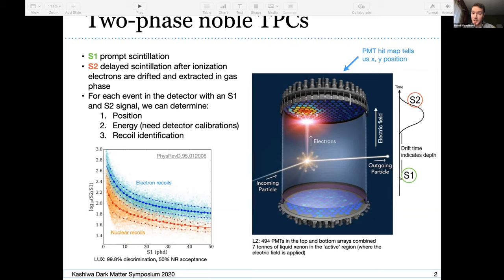It tells us the position because we know which PMTs saw some light in the S2 signal, and we know the difference between the S1 and the S2 signal in time, so we can reconstruct the depth of the event. We can figure out the energy of the event from the two signals together, and obviously we use detector calibrations to calibrate our detector.